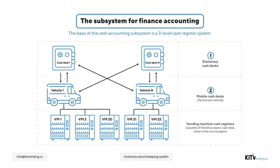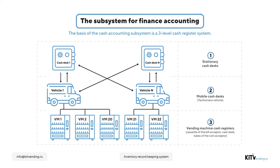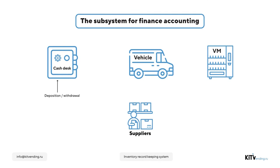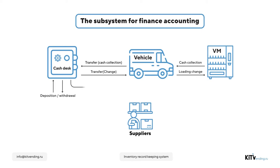The technician's vehicle stores cash taken from vending machines and cash meant to be put into them as change. The third level is the vending machine itself, with money received from customers. Here is the typical in-system cash flow pattern. Basic activities are: deposition and withdrawal of money from the cash desk, transferring money between cash desks, collecting money from vending machines, filling the latter with change money, and paying the supplier for goods and services.